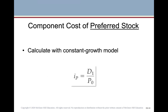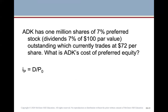To calculate the cost of preferred stock, we use the constant growth model with g=0: iP equals D1 over P0. ADK has one million shares of 7% preferred stock, meaning on every $100 of value there's a $7 dividend. The preferred stock is currently trading at $72 per share. The cost of preferred equity is simply $7 divided by $72, which gives 9.72%.